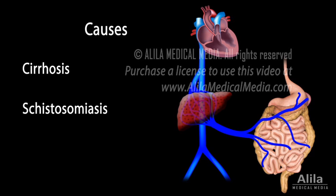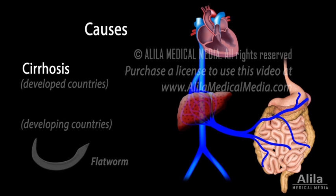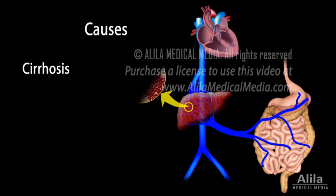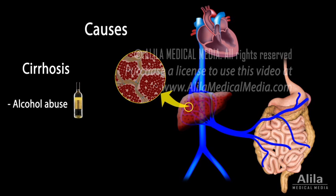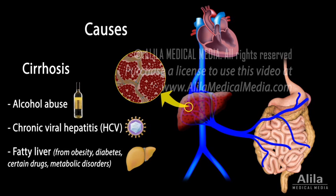Cirrhosis is by far the most common cause in developed countries, while schistosomiasis, an infection by parasitic flatworms, is more prevalent in children from developing countries. Cirrhosis is the widespread scarring of liver tissues caused by long-term alcohol abuse, chronic viral hepatitis, or fatty liver.